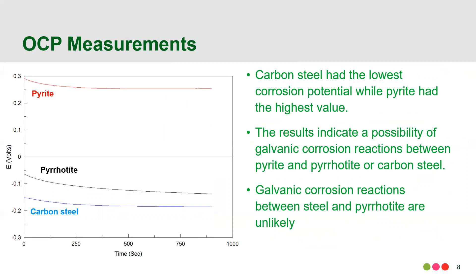Those open circuit potential measurements showed that there is a significant difference in potential between the pyrite in particular and the other two materials. Pyrite and carbon steel had similar open circuit potentials and less than 0.1 of a volt difference after 30 minutes of time. You can see that each of these curves flattens out over time and they approach a constant value. Generally speaking, a value of less than 0.1 volt difference usually means that you're not very likely to get corrosion reactions between two different materials. However, the pyrite had quite a large difference between both itself and the other two materials. And so these results suggested that there's a possibility of galvanic corrosion reactions between them.